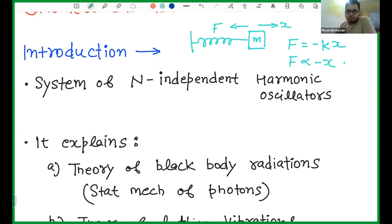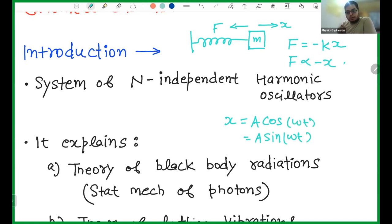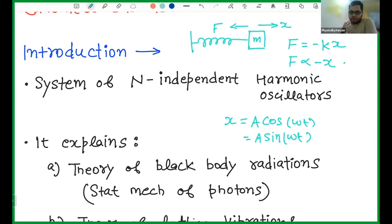Why harmonic? The word harmonic comes because if you solve this problem, your displacement will be a function of either cos or sin. Your position of this mass will vary with sin or cos, and sin and cos are the harmonic functions. That is why these kinds of oscillations are known as harmonic oscillations.